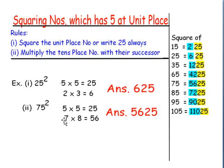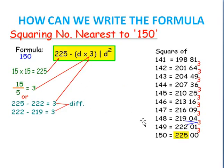Similarly, for making the square of 75, we write 5 into 5 equals 25, and 7 plus 1 is 8. So 7 into 8 is 56. Hence our answer will be 5625. Friends, now we will be doing the square of all numbers from 15, 25, 35, 65, 75 and so on — by writing 25 on the right side first and then multiplying the tens digit by one more than itself. We will give the square of all numbers which end with 5 at the unit place.